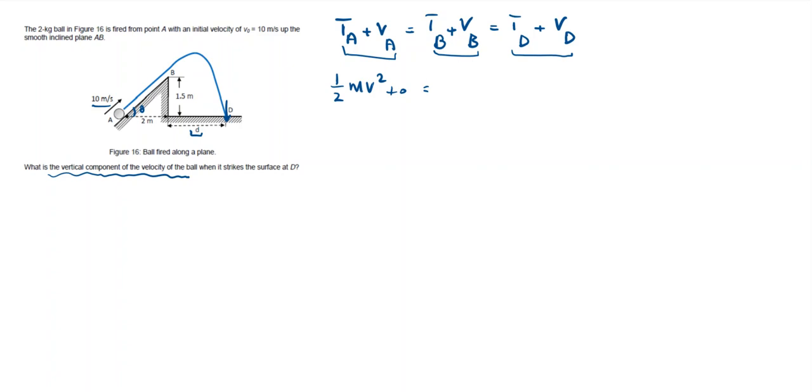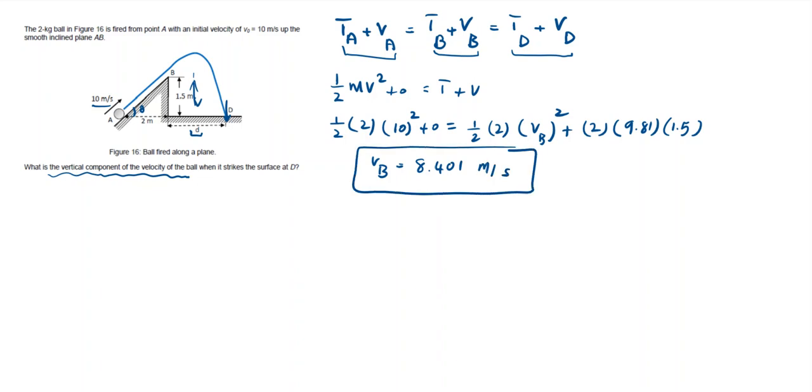But at point B, I have kinetic energy and potential. So at point A, it is half M, M is 2 kilograms, and V is 10 meters per second squared, plus 0 is equal to half M. I'm just going to sub in the values here. So the velocity at B squared plus potential at B is 2, G is 9.81, and the height is just 1.5. From here, I can easily find that velocity at B is 8.401 meters per second. So that is my first thing.